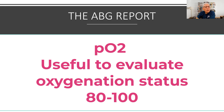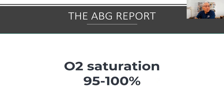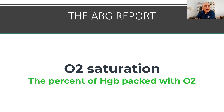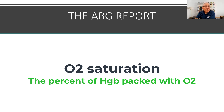When we look at the PO2, we are concerned with a decrease — if it is less than 80, we would call that hypoxemia, and we would find out why the patient is having a hypoxic episode. The O2 saturation is not the same as the PO2; it represents the amount of oxygen packed in hemoglobin.